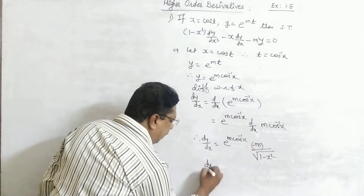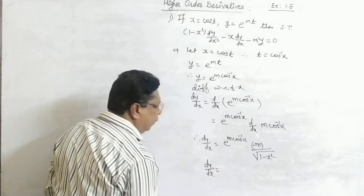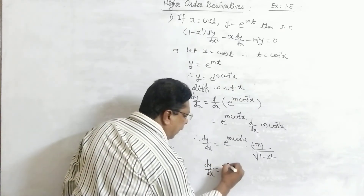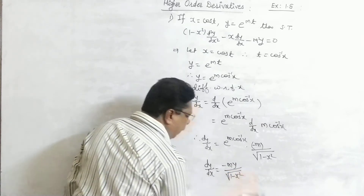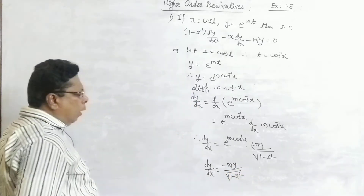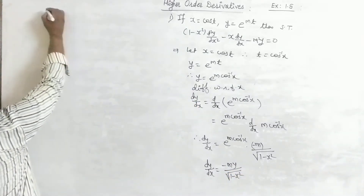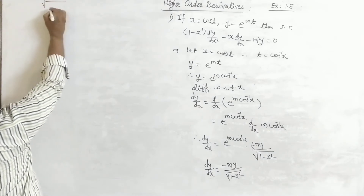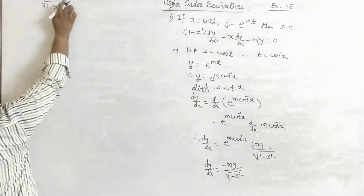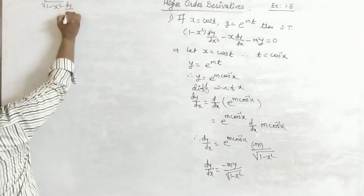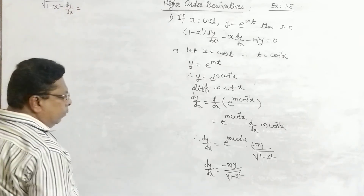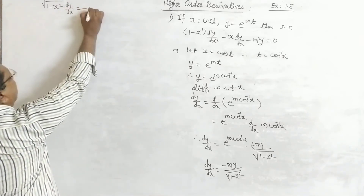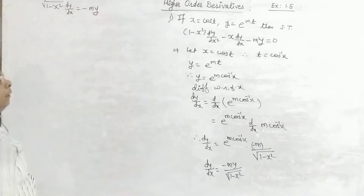Cross-multiplying: √(1 − x²) · dy/dx equals −m·y. Now differentiate both sides with respect to x again.